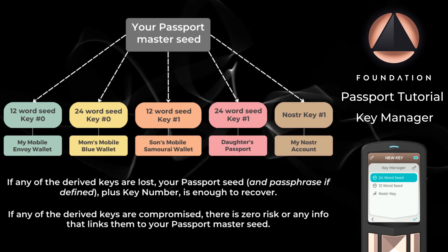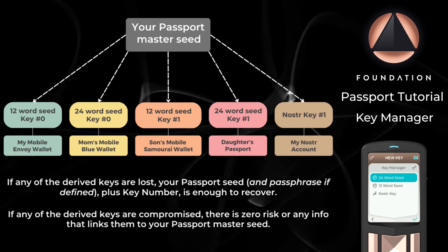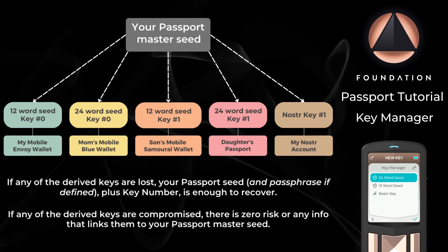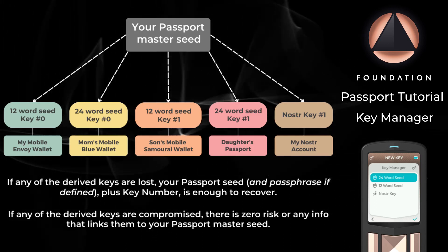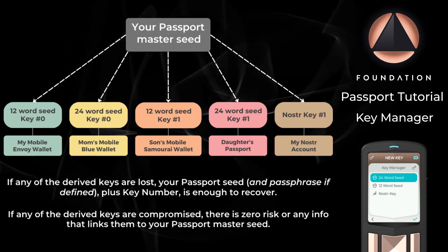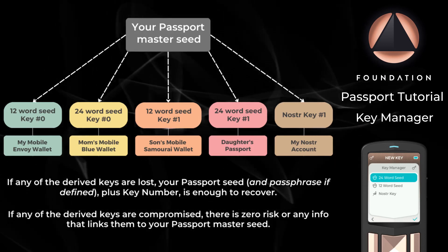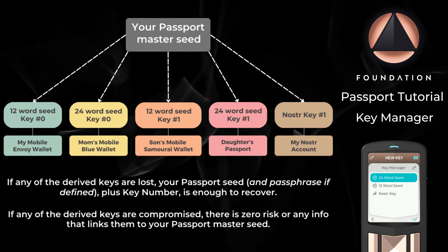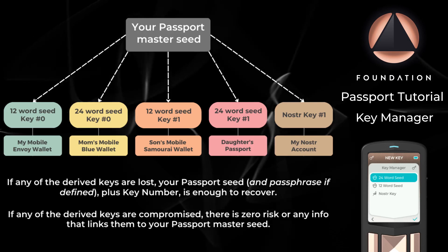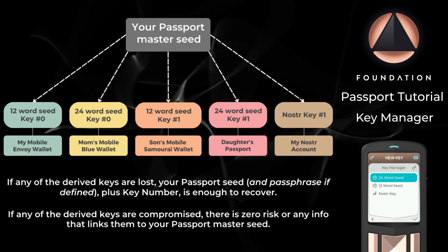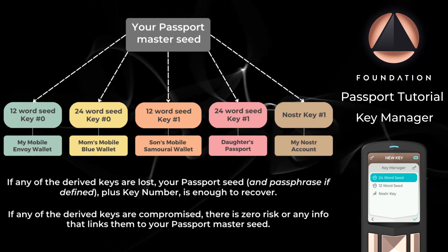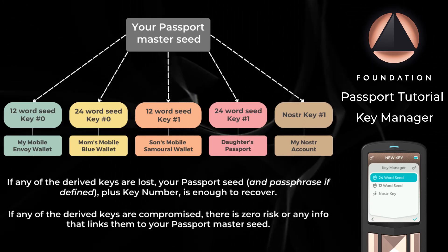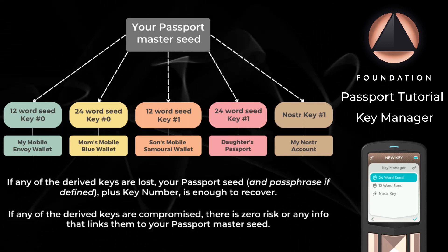Each child seed is completely unique and cannot be tied to the master seed or any other derived child seeds. The beauty of the key manager function on Passport is that all keys are generated in a deterministic fashion from your Passport's master seed. This means that if any of the derived keys are lost, Passport can re-derive them in seconds so that no funds are ever lost. Passport also includes the derived key details into any encrypted backups you make onto a micro SD card, meaning you can have a single encrypted backup solution for the whole family's Bitcoin wallets. The key manager extension also allows for the export of NOSTR keys, but that feature will be covered in a separate tutorial.